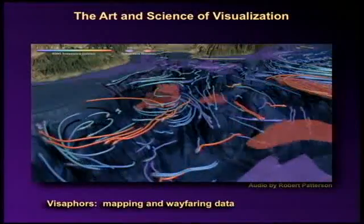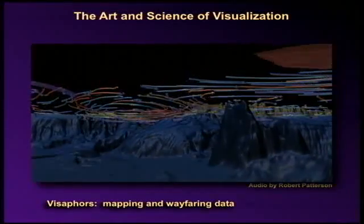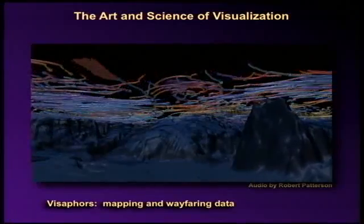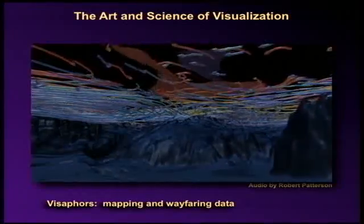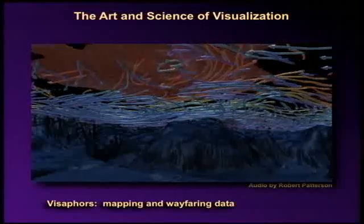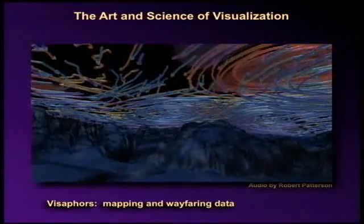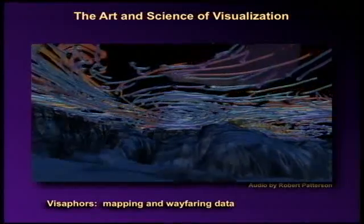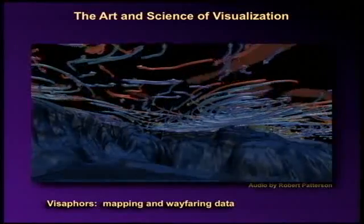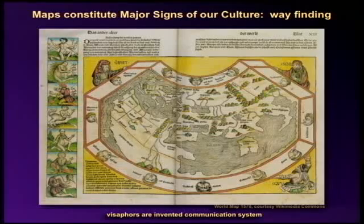We can take those exact visual idioms and apply them not to tornadoes but to oceans. In oceans, it's just a flow of stuff — it happens to be water instead of air. In this way, we are wayfaring the data. We are mapping, but it's not just representation — there's a lot of interpretation and design. There is an artistic choice as well as a scientific choice in creating visifors. These visifors are like maps, and geographical maps have been major signs of our culture — a way that we as explorers wayfind our environment. They are invented communication systems: maps, language, visifors all play that kind of role in our culture.